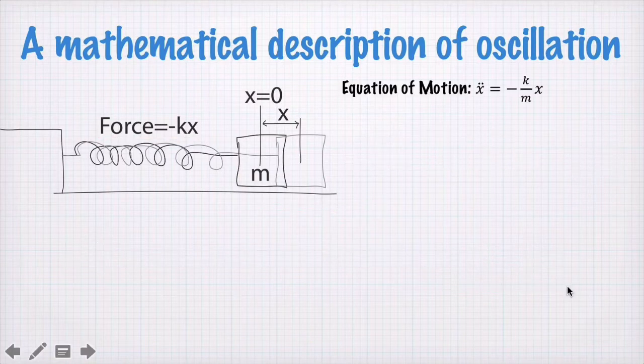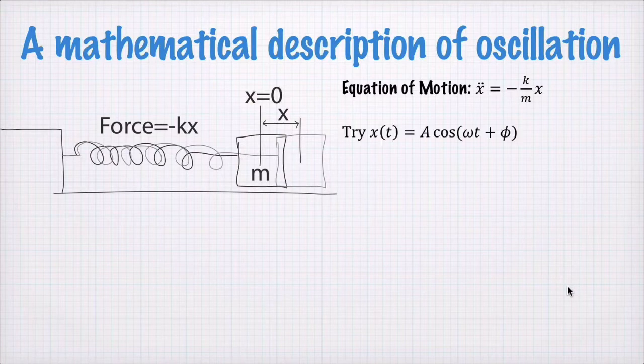So here's our equation of motion. How do we solve it? Well we're looking for something that oscillates. Let's take for example a cosine function. We could equally well choose a sine function. In fact a cosine function and a sine function are only different by a phase, and there's an arbitrary phase φ in here so it's kind of the same thing.